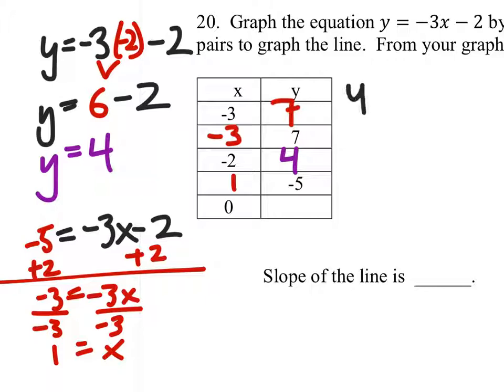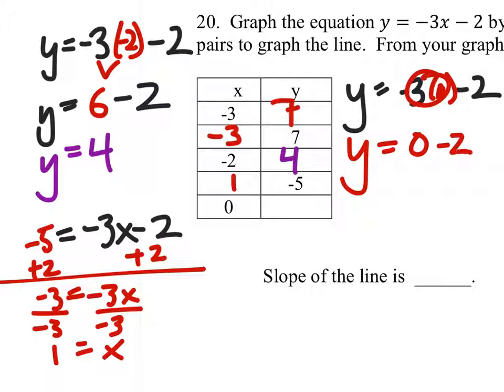This last one should be pretty easy. Y equals negative 3x minus 2. But x is 0. And anything times 0 is 0. So y equals 0 minus 2. And the y value would be negative 2.